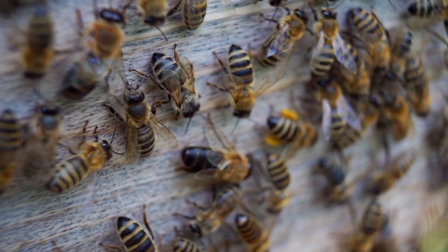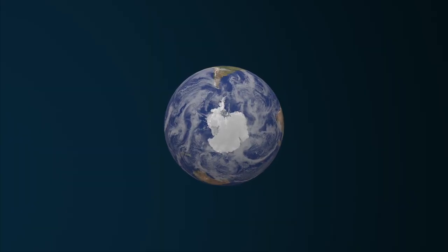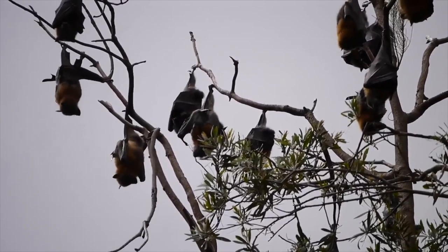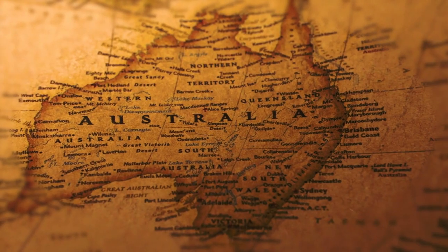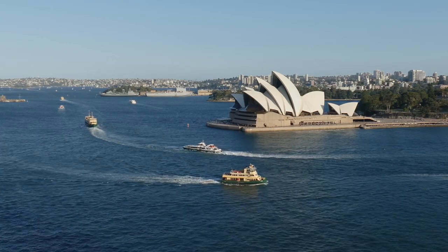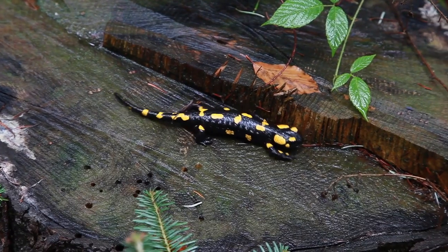Bees are found everywhere in the world apart from Antarctica. There are more than 1,000 kinds of bats in the world. Australia has the most amount of reptiles in the world, over 750 different species.